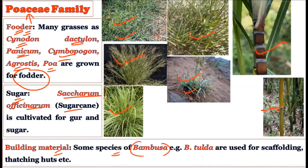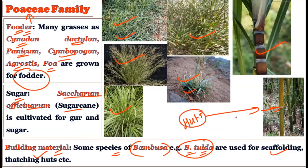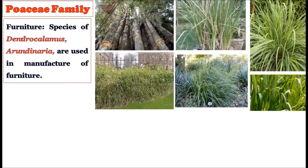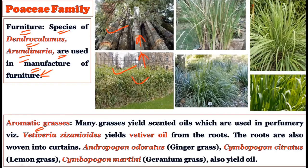Saccharum officinarum (sugarcane) is a very important Poaceae member largely responsible for sugar production — providing 60 to 90 percent of the world's sugar. For building material, Bambusa (bamboo) species such as Bambusa tulda are used to create bamboo houses, scaffolding, and thatching.